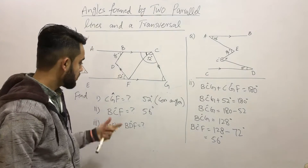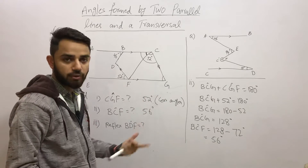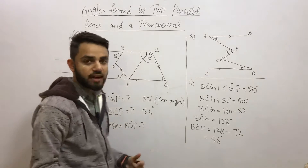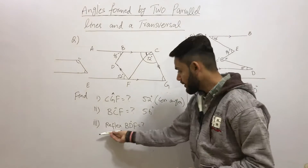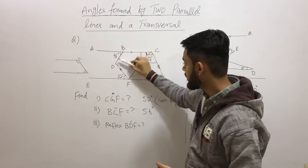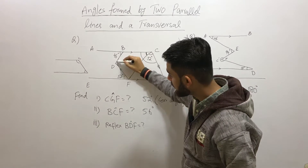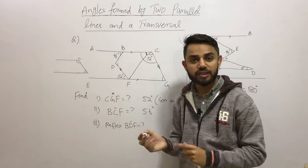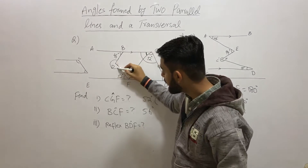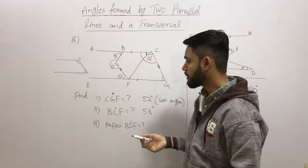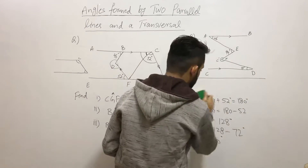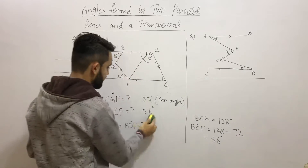Now we need to find reflex angle BDF. First, understand what 'reflex' means — angle BDF is the angle formed along line BDF, but the reflex angle means we go to the opposite side, finding the larger angle all the way around. We'll use a simple method to find this.